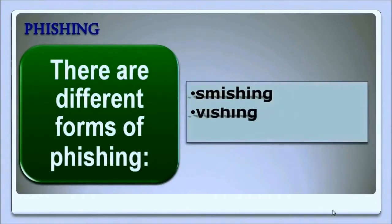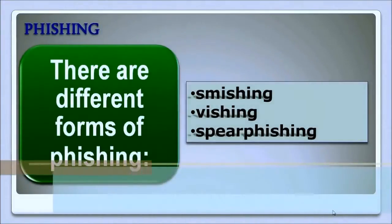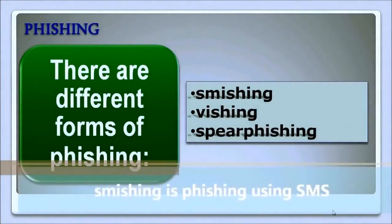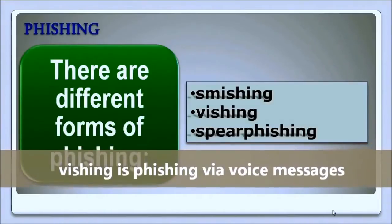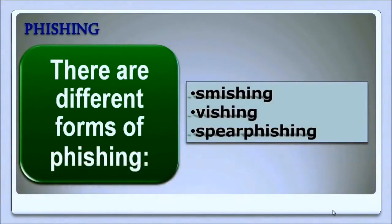There are different forms of phishing, like smishing, vishing, and spear phishing. Smishing is a form of phishing sent via SMS messages. While phishing is most popularly sent using emails, smishing is a variation that uses SMS — short messaging system — text messages. Vishing is a form of phishing that uses voice messages, whether recorded or by direct calling, which makes it more similar to pretexting.